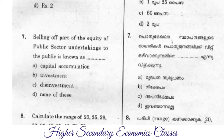Question 7: Selling of part of the equity of public sector undertakings to the public is known as — options are capital accumulation, investment, disinvestment, and none of these. The answer is disinvestment.